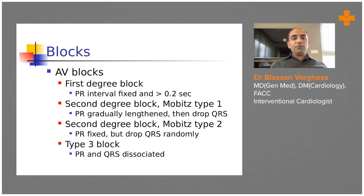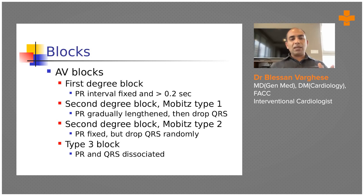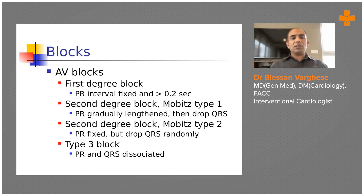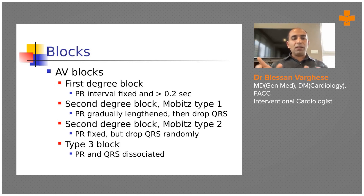Second degree AV block is divided into Mobitz Type 1 and Type 2. Mobitz Type 1 shows gradual prolongation of the PR interval until a QRS is dropped. Mobitz Type 2 has a fixed PR interval with no prolongation, but a QRS is dropped randomly. Third degree (complete) AV block shows no relation between the P waves and QRS complexes — the P waves beat in one rhythm and the QRS in a completely different rhythm.